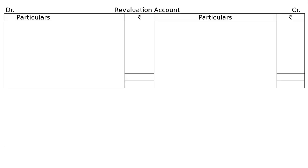Now prepare the revaluation account as rough work in T-form. Part A: out of insurance which was debited to profit and loss account, Rs. 1,500 be carried forward as unexpired insurance — this is an increase in asset.